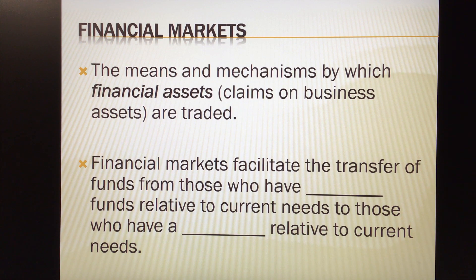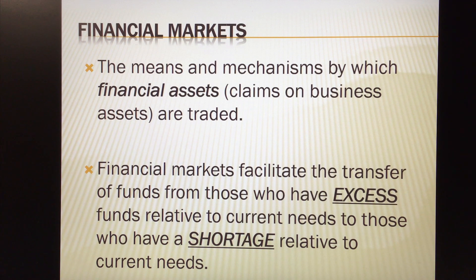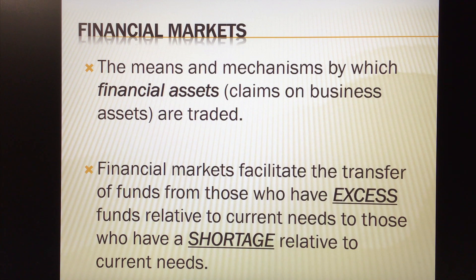Financial markets facilitate the transfer of funds from those who have excess funds — more funds relative to their current needs — to those who have a shortage relative to current needs. It's important to realize that for someone to be a borrower, there has to be a lender. On every loan arrangement, someone is borrowing and someone is necessarily lending. Whatever rate the borrower is paying on their loan, that's the rate the lender is receiving or earning — a fact that will have more significance for us later on.